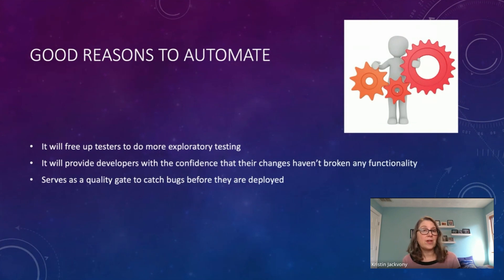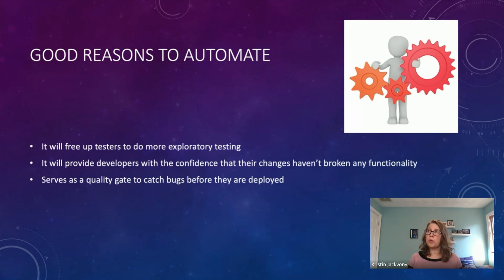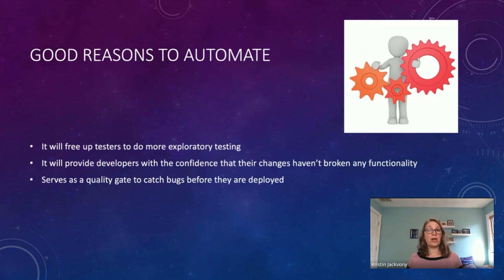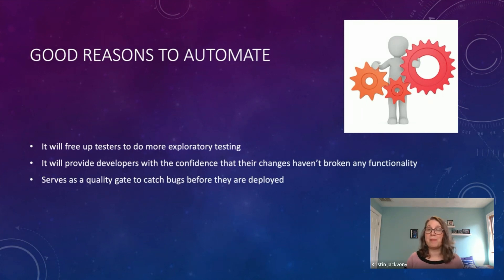Here are some good reasons to automate. First, it will free up testers to do more exploratory testing — and we all know that exploratory testing is how the really clever bugs are found. It will also provide developers with confidence that their changes haven't broken anything. If a developer is working in the middle of the night and wants to push changes to the build, automated testing lets them find out if they broke something without waking you up to manually test it.